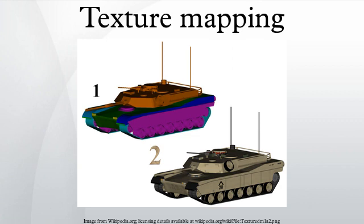Perspective correct texturing accounts for the vertices' positions in 3D space, rather than simply interpolating a 2D triangle. This achieves the correct visual effect, but it is slower to calculate.